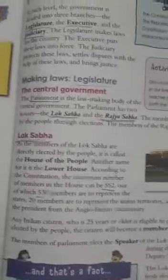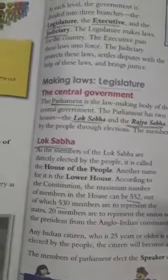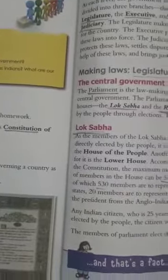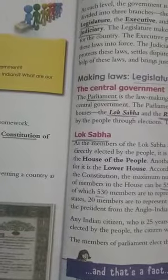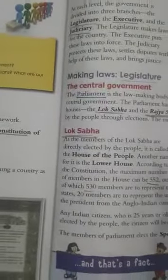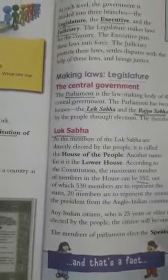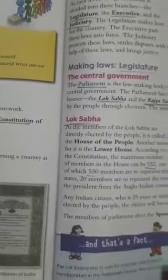Now we will see about the Rajya Sabha. The Rajya Sabha is the Council of States and is also called the Upper House. Members of the Rajya Sabha are elected by the members of the state legislative assemblies.